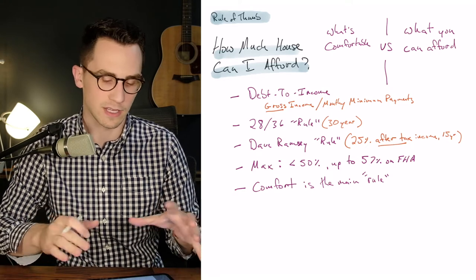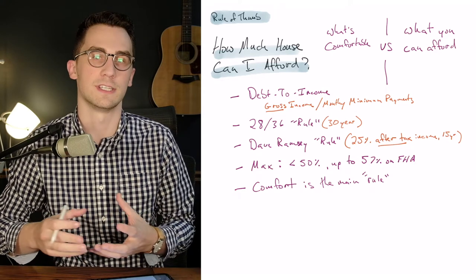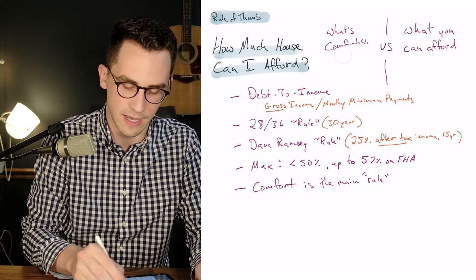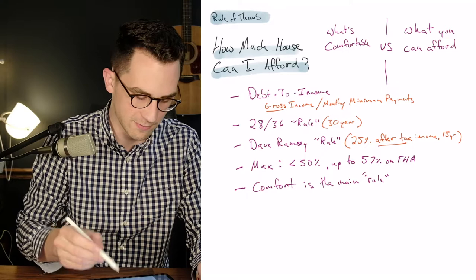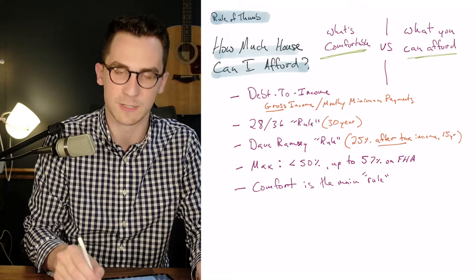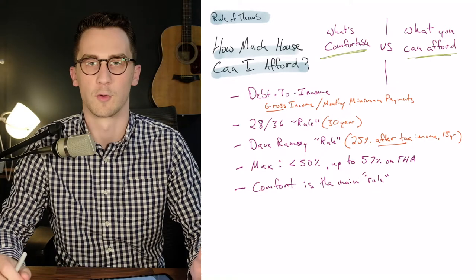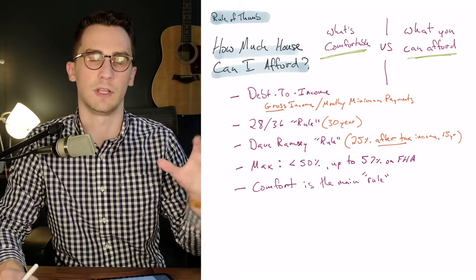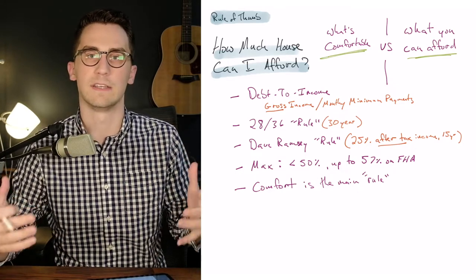So we're going to be talking about what's comfortable versus what you can afford. There's going to be two big differences: your comfort level versus what you actually can afford from a mortgage company. Quick side note, there's going to be timestamps in the comments below so you can skip around this video to find different points that you're looking for.